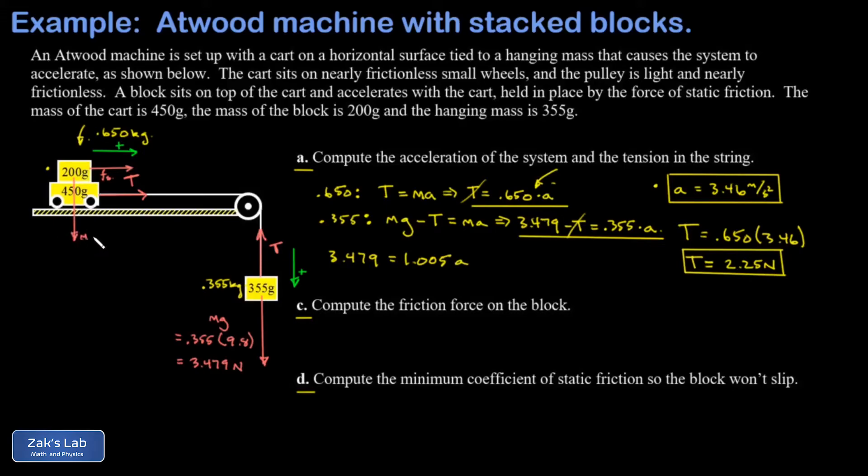And that static friction force depends on the normal force. And that depends on the weight of that block. So I have a weight of that little block of mg, so 0.2 kilograms times 9.8 meters per second squared. And this gives me 1.96 Newtons.